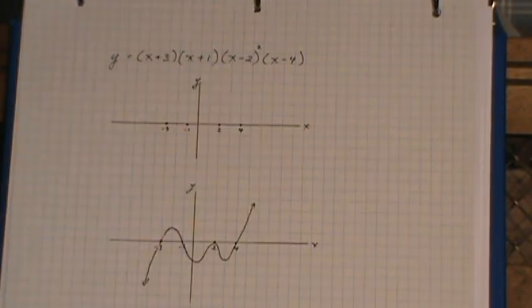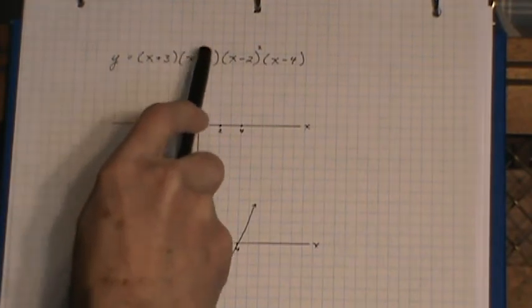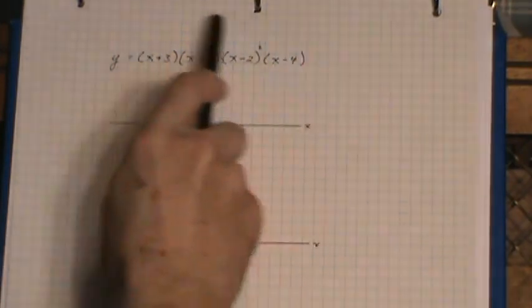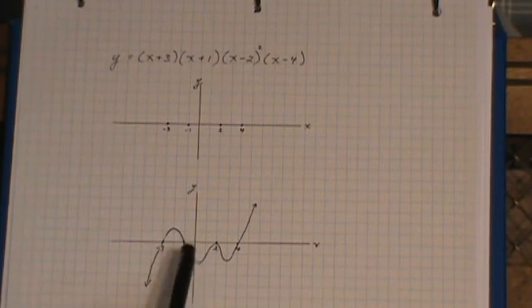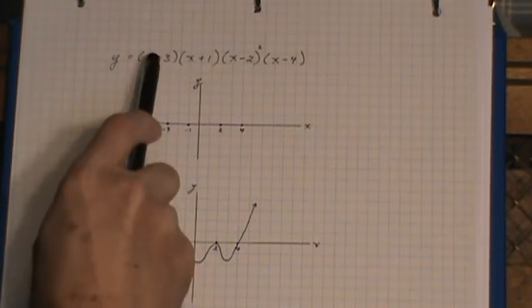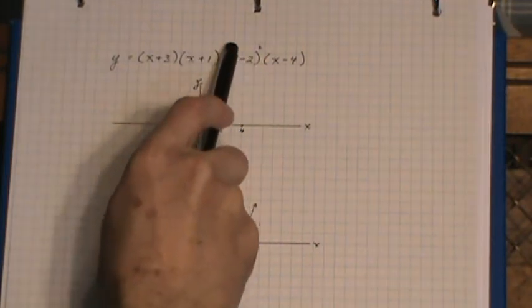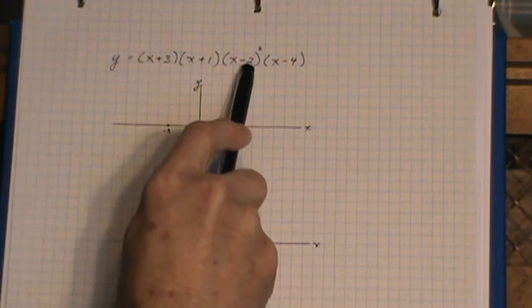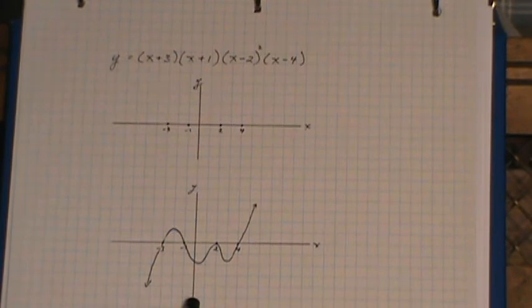If you want to know how high or how low these go, for example, if you want the y-intercept, put a 0 in here and work this out. You'll be surprised at what a large number you get here. These are actually much more stretched out than they appear. For example, if I do put in a 0, I'll have 3 times 1 times 4 because that's negative 2 squared times a negative 4, which will give me a large negative number.